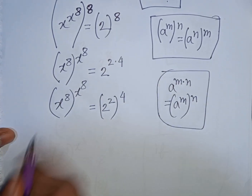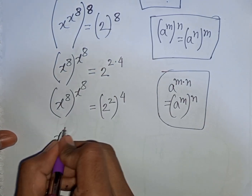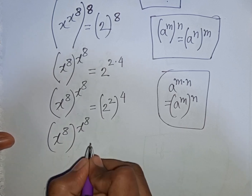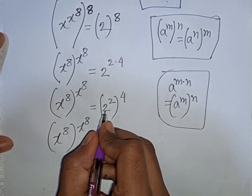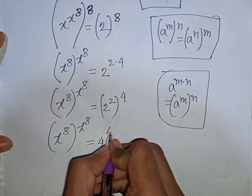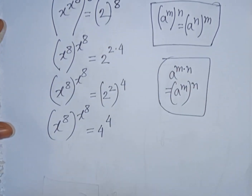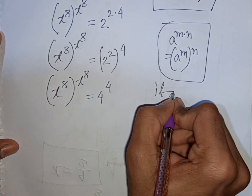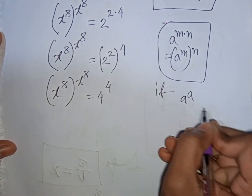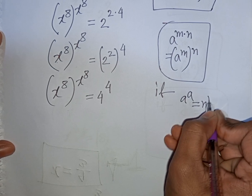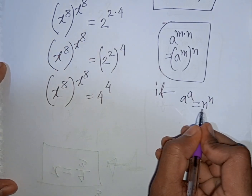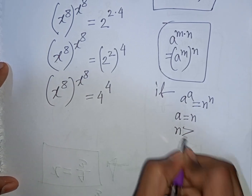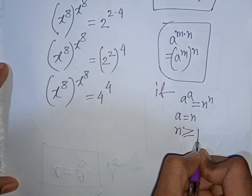Now I can write x power 8, bracket power of x to the power 8, is equal to 2 power 4, then power 4. Here I can apply the rule that if a power a is equal to n power n, then a will be equal to n, where n is greater than or equal to 1.